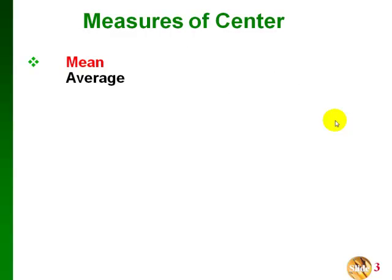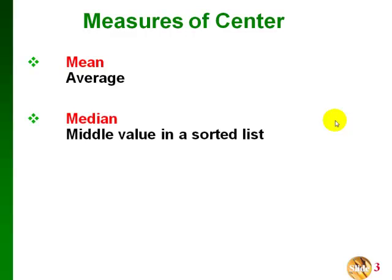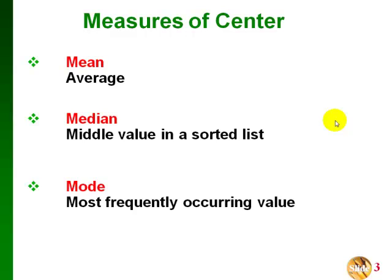When we talk about center, we mean the center of a set of data — trying to find where the middle of the data is. We have several different ways to look at this. First, we can look at the mean, which is the same as the average. We can look at the median, which is the middle value in a sorted list of data. Or we can look at the mode, which is the most frequently occurring data value.